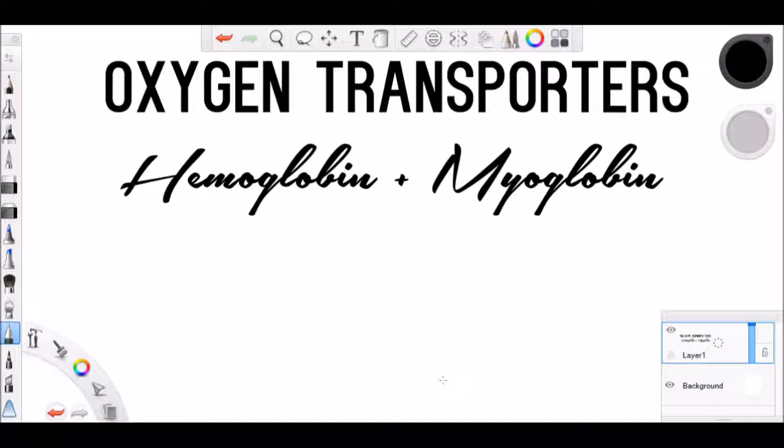Hemoglobin is the oxygen binding protein that exists in the human blood, and binding oxygen is a reversible process.